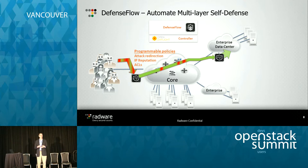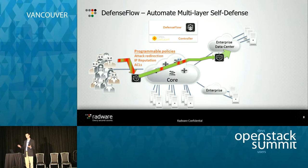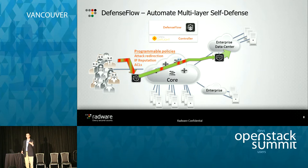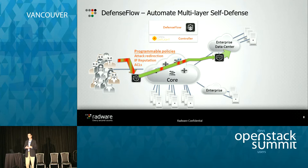That's just one example, but the rules could be whatever the carrier or enterprise customer decides as their policy. If they wanted to block the attack using a particular ACL, they could do it that way. If it needed to be redirected to a web application firewall instead of a scrubbing center, that could be done as well, or if it needed to be decrypted because it was an SSL attack — multiple different ways to mitigate, going to the proper network element, either hardware or virtual.